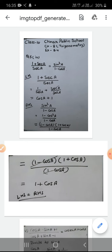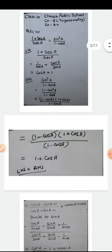Now taking the right hand side: sin²A / (1 - cos A). Here I can write sin²A using the identity as (1 - cos²A). Then I factor 1 - cos²A using the a² - b² identity: (1 - cos A)(1 + cos A). So the expression becomes (1 - cos A)(1 + cos A) / (1 - cos A). The (1 - cos A) cancels from numerator and denominator, leaving 1 + cos A.